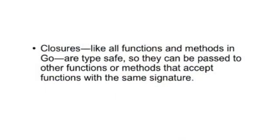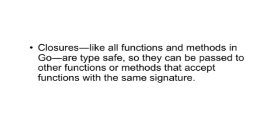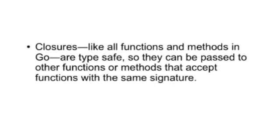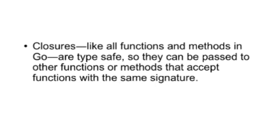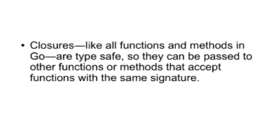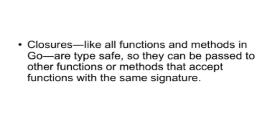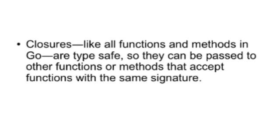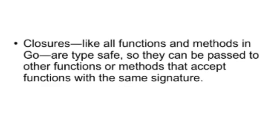The other thing about Go function literals, and indeed Go generally, it's all type safe. So you can pass function literals as callbacks, and yet they're type safe. So if you call the callback that's been passed with the wrong types, you'll get a compile-time error, not a runtime error. So your program won't crash — it won't even compile until you get it right.